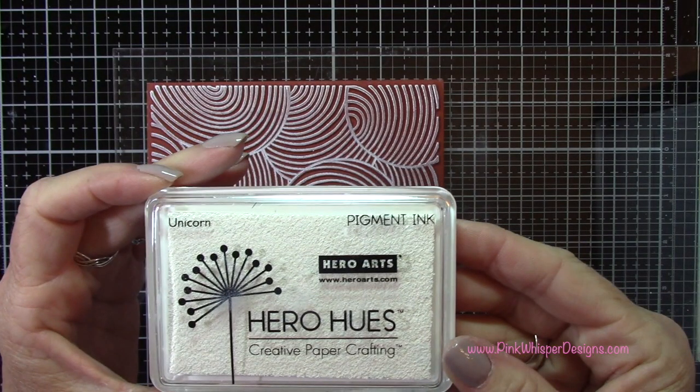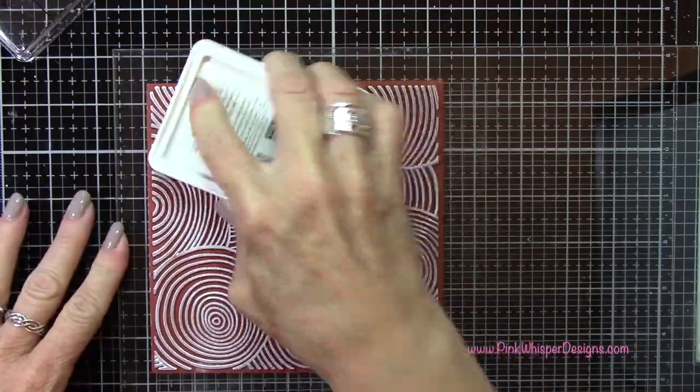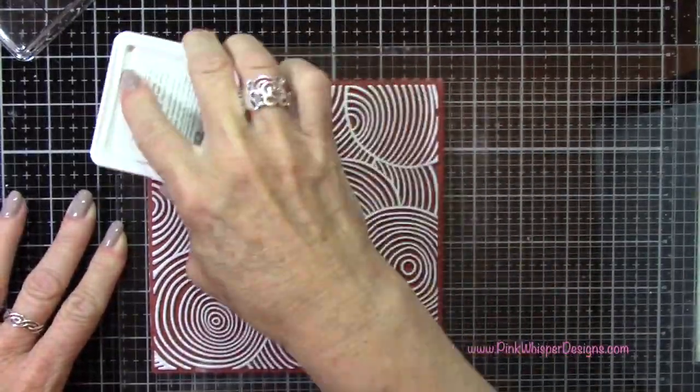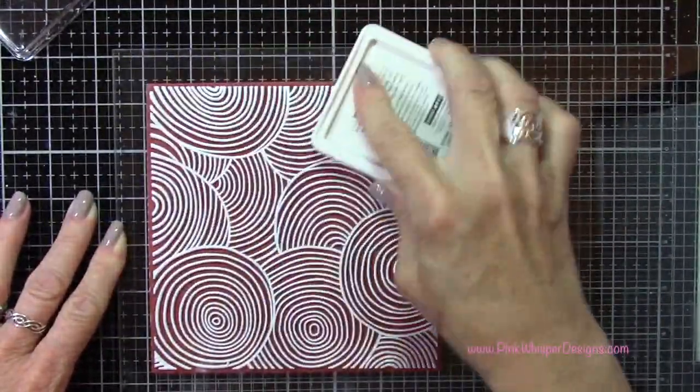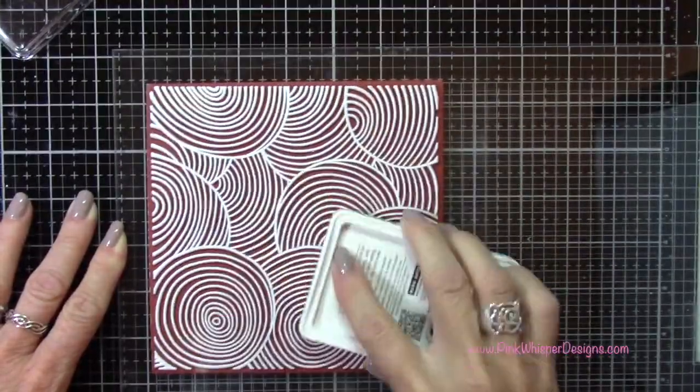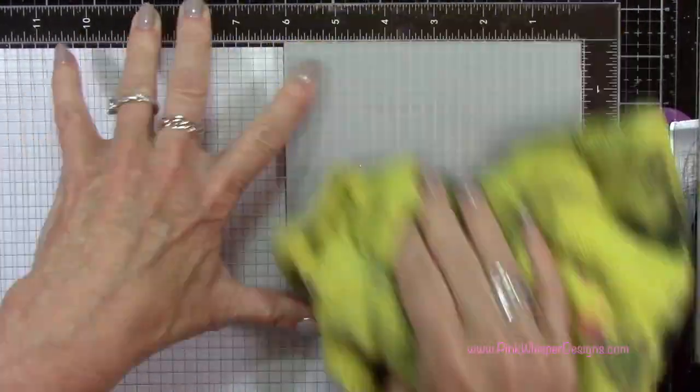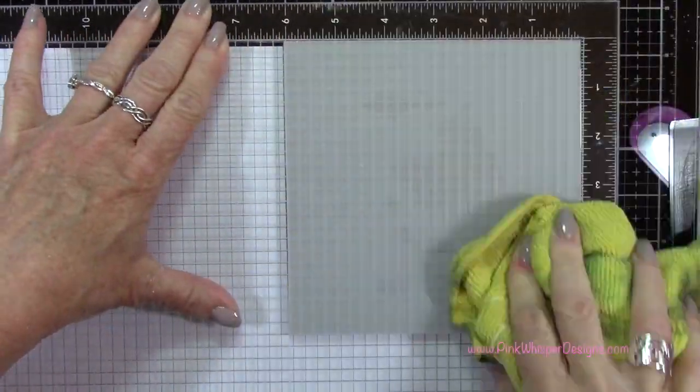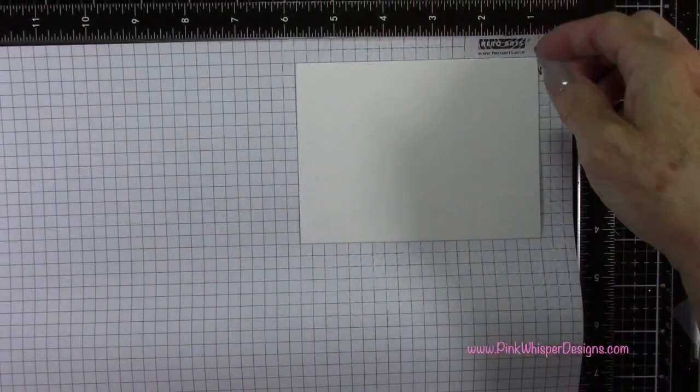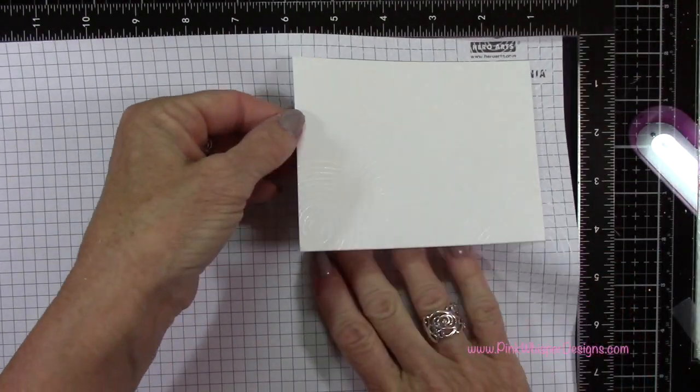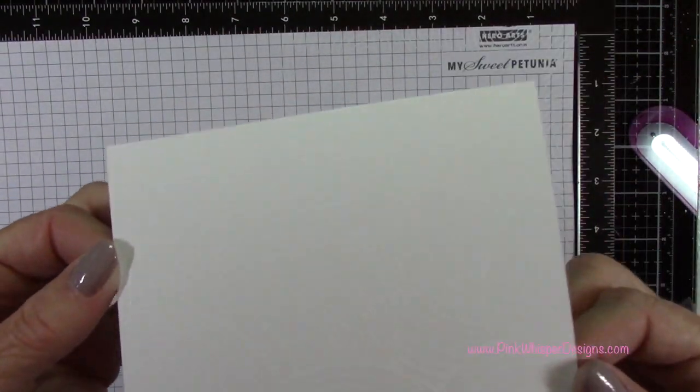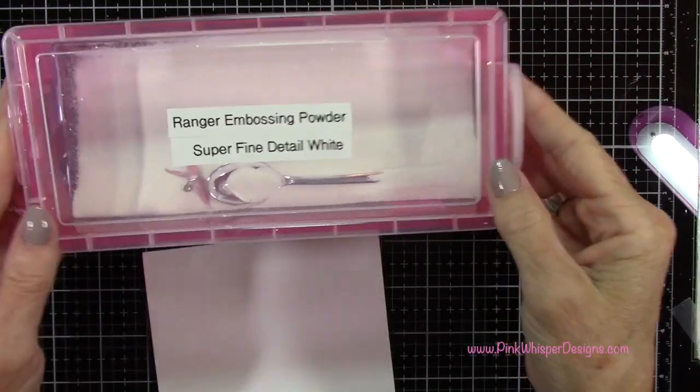So for ink I'm using the Hero Hues Unicorn Pigment Ink. This is just a bright white pigment ink and I'm going to ink that up really well. I want to make sure I have a nice coating of that all around the back of my stamp. And then I'm going to press this down. I'm just using my towel just to press it out and get a nice even stamping here. And then I'll remove this from the positioner. And you can see there that it makes a beautiful image.